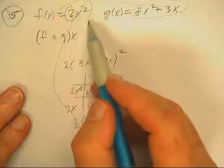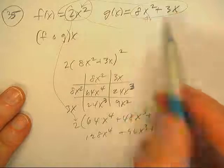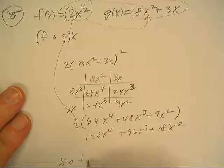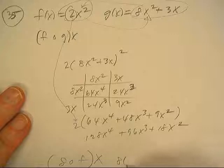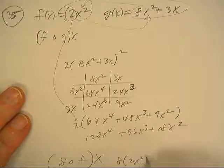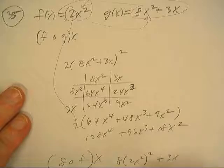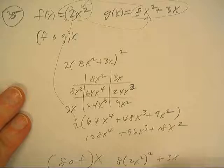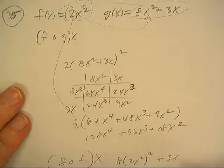And then when I take this one and put it in here, it's a whole lot easier. So g of f is easier on this one, because I get 8 and I substitute that for the squared term. 8 times 4x to the 4th plus 3x.